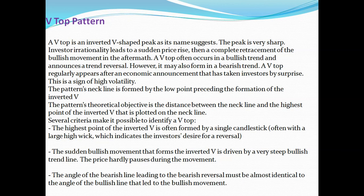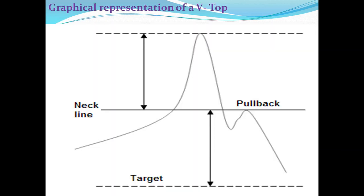The sudden bullish movement that forms the inverted V is given by a very steep bullish trend line — the price hardly pauses during the movement. The angle of the bearish line leading to the bearish reversal must be almost identical to the angle of the bullish line that led to the bullish movement. So you see, it is a kind of inverted V.